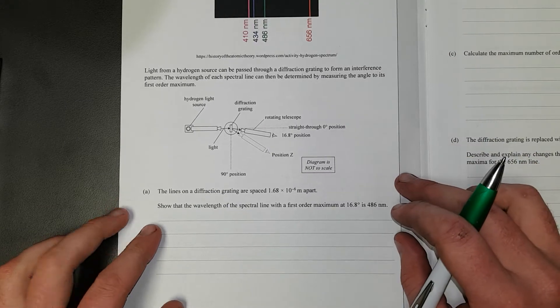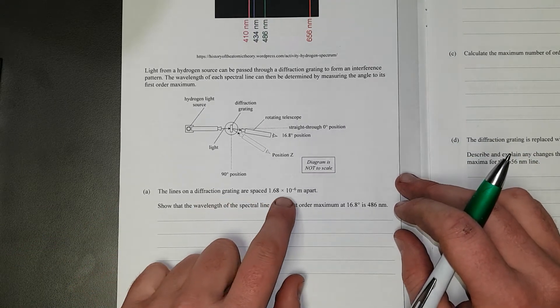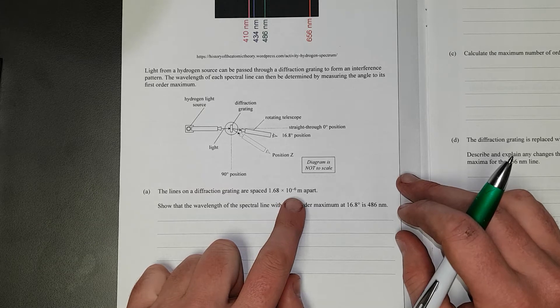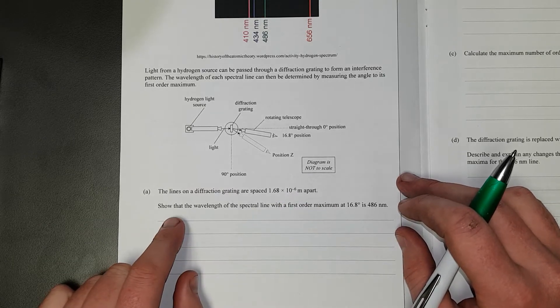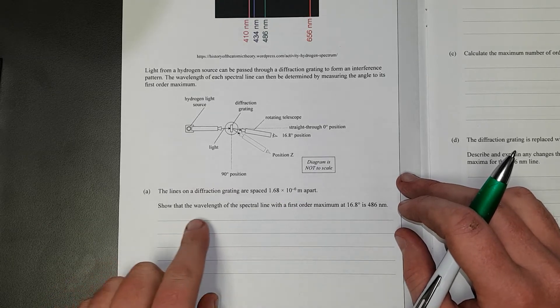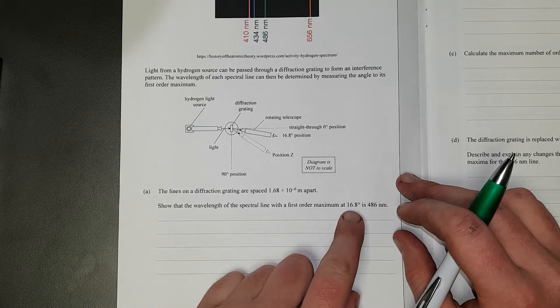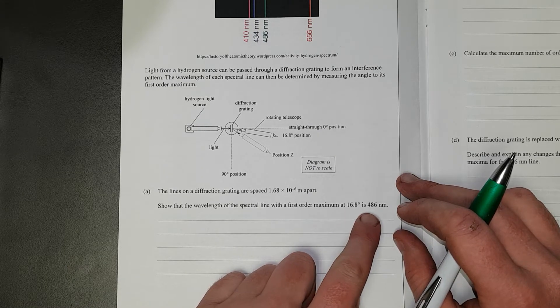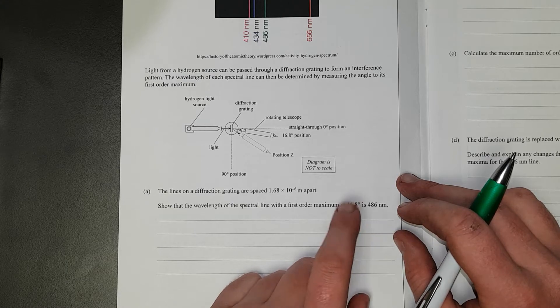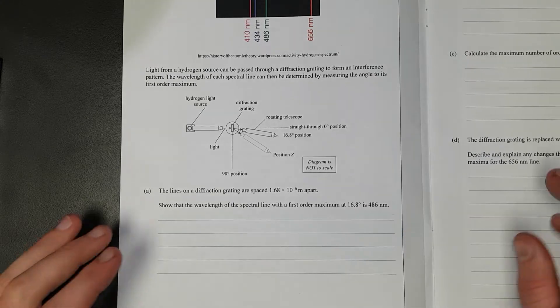Question 1. The lines on the diffraction grating are 1.6 times 10 to the negative 6 metres apart. So 1.6 micrometres. Show the wavelength of the spectral line at the first order maximum is 16.8 degrees. At 16.8 degrees, it's 486 nanometres. Right.